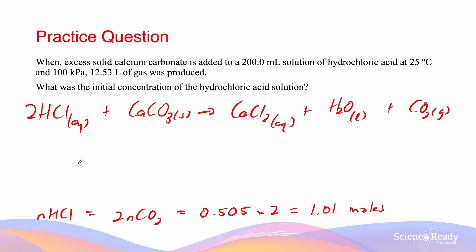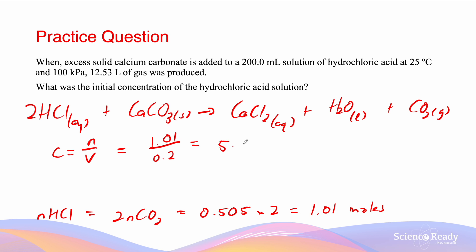The question asks for the initial concentration of the hydrochloric acid solution. Using C = N/V: concentration equals 1.01 divided by 0.2 liters (200 mL), giving a value of 5.05 mol/L to three significant figures.